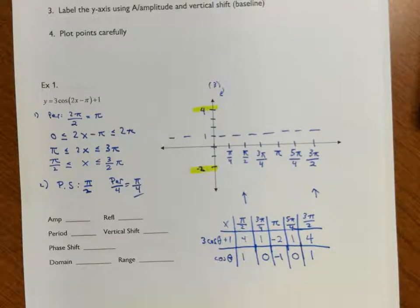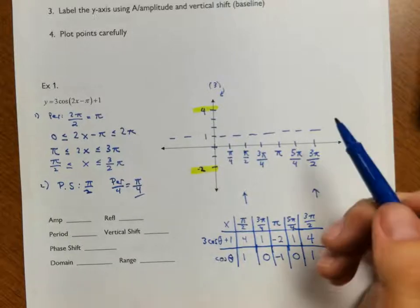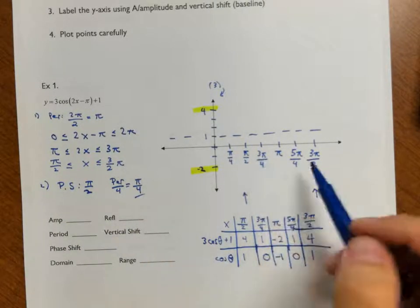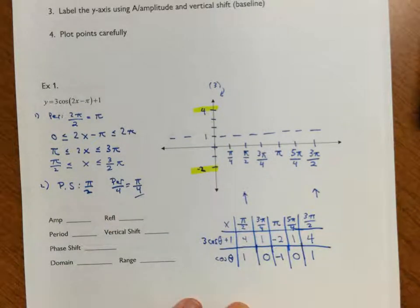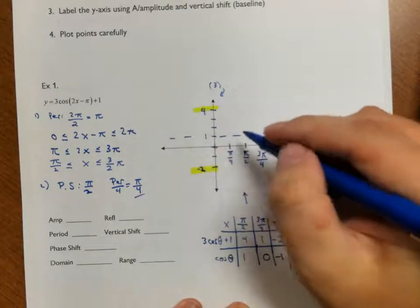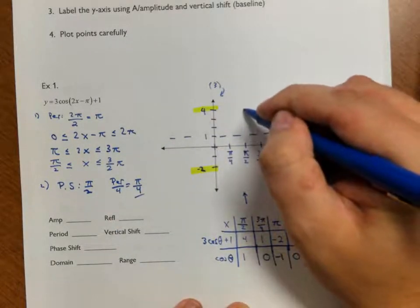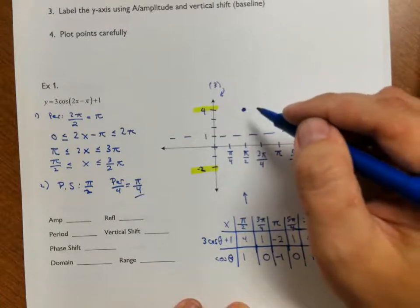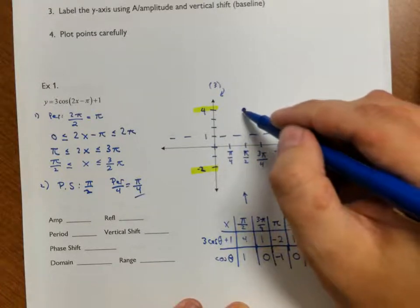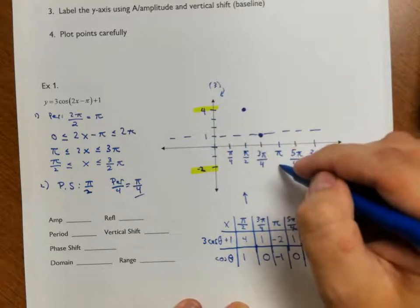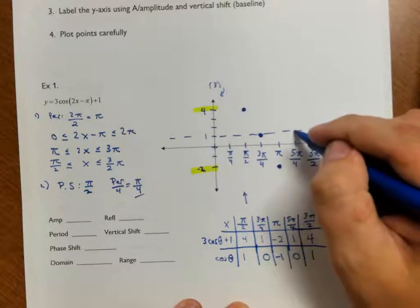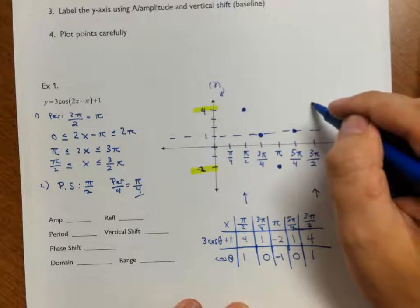I find it much simpler to think about it this way. From my bookend method, I know I will be graphing between π/2 and 3π/2. Since this is a cosine with no reflection, the cosine graph starts at the highest part of the range. So I start up at my highest point — up here at 4 — then go to the middle, all the way down to the lowest point, back up to the middle, and back up to the top.